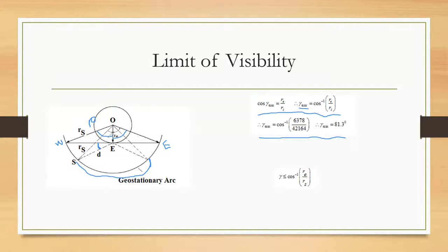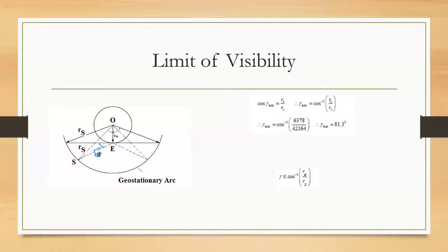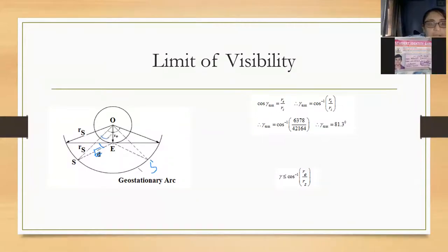Our task now is to find this new value. The antenna is no longer at the surface of the earth but has a certain elevation angle, and because of this elevation my coverage area is reducing. Our target is to find gamma dash, which gives us the new limits of visibility. For this, I am using the sine rule.